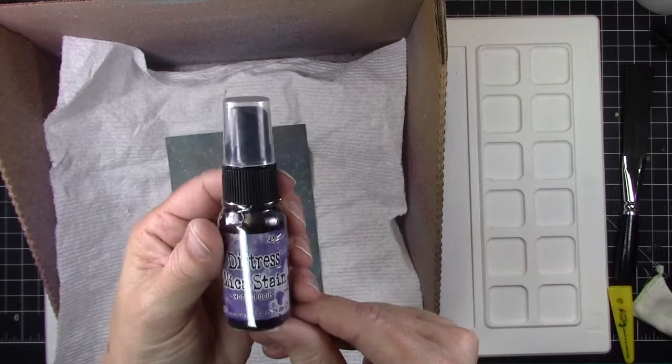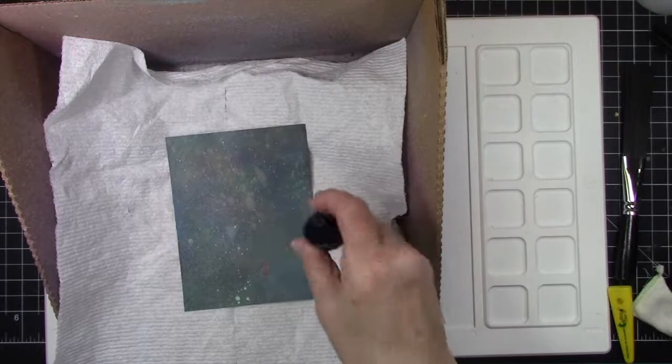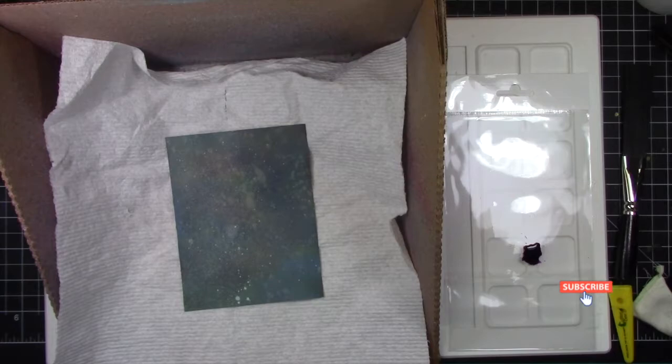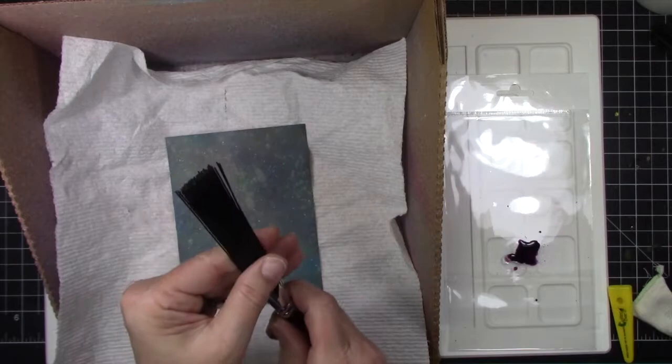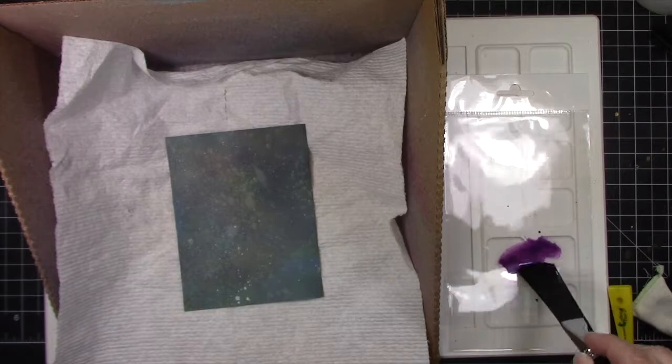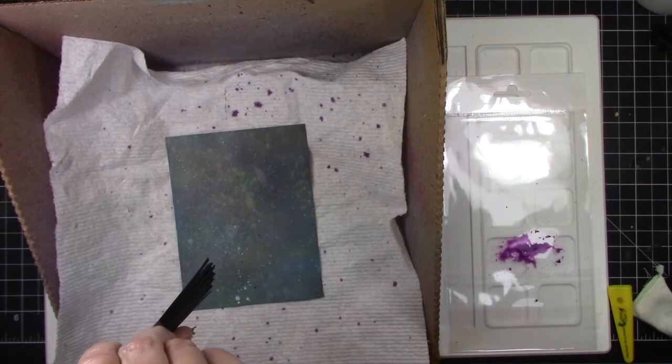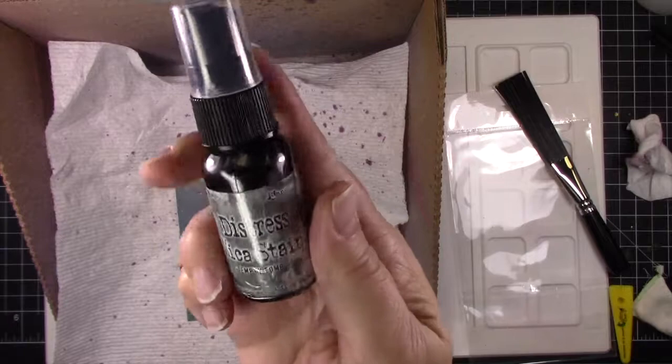Now we're going to try mica spray to bring some life to this background. This mica spray is awesome. And I'm going to show you all about it here in a minute. You're not going to be able to tell much while it's wet. And you do have to shake it really, really well, because the mica kind of clumps up in the bottom and you've got to get that mica in there because that's the part you can really see.